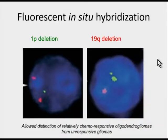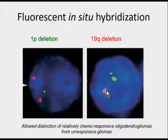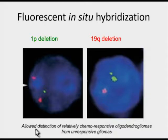Fluorescent in situ hybridization entails hybridizing cell preparations with probes to particular sites. The green probe is for chromosome 1P and the red is for the long arm of chromosome 19Q. In this preparation, there is loss of one copy of 1P and loss of 19Q—this is called a 1P19Q co-deleted oligodendroglioma. This technique has allowed distinction of relatively chemo-responsive oligodendrogliomas from unresponsive gliomas and has been the standard of care for many years.